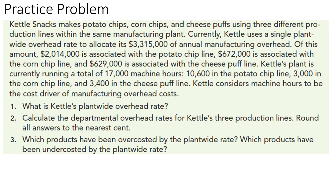Currently Kettle uses a single plant-wide overhead rate to allocate its $3,315,000 of annual manufacturing overhead. Of this amount, $2,014,000 is associated with the potato chip line, $672,000 is associated with the corn chip line, and $629,000 is associated with the cheese puff line.